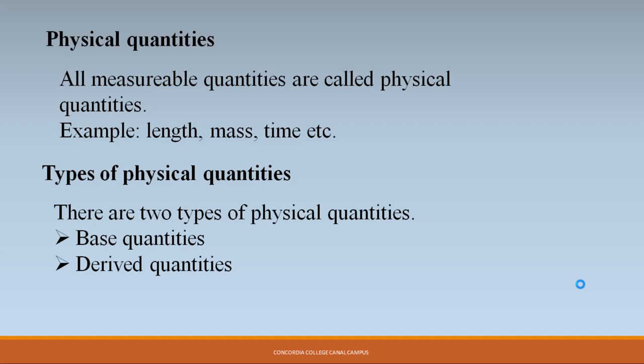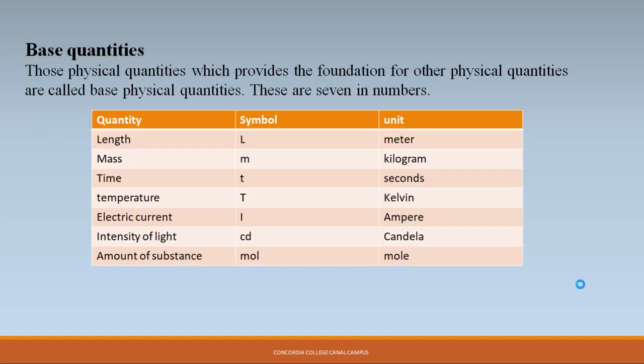Now let's talk about the types of physical quantities. There are two types: base quantities and derived quantities. Base quantities are those physical quantities which provide the foundation for other physical quantities. There are seven base quantities in total.